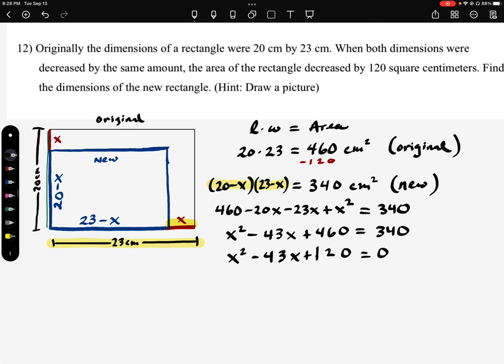Sorry, I'm rushing there, but my mic is running out of battery, so I don't want it to die before I'm finished. So can this factor? Are there factors of 120 that add to 43? Well, there actually are, because 40 times 3 is 120 and 40 plus 3 is 43. So we've got x minus 40 and x minus 3.